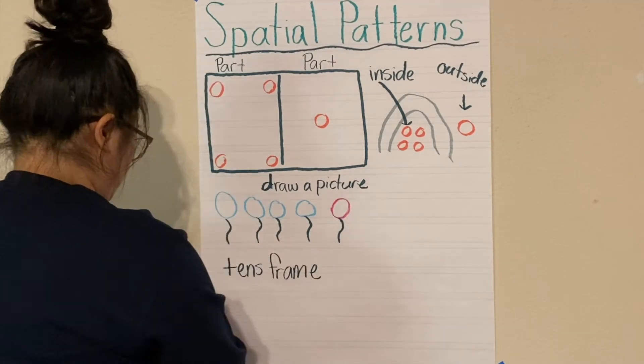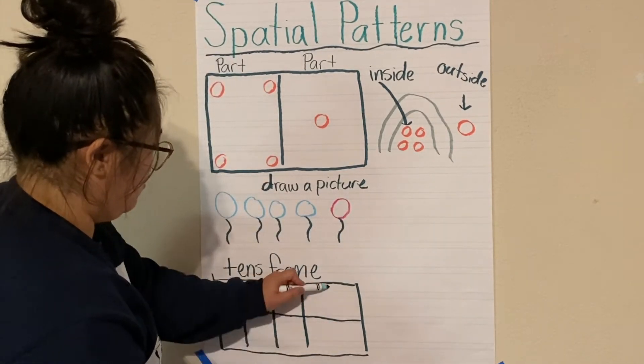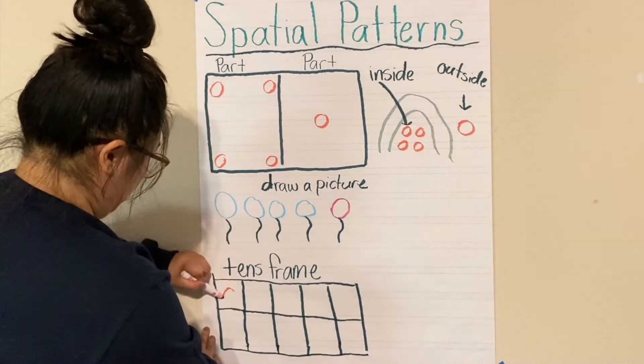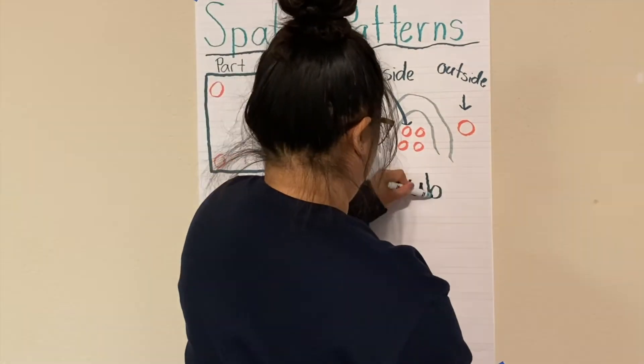After that I drew a ten frame and I was making sure that I made ten boxes. Sometimes I mess up on that but this time I made sure I didn't. And I put four red counters and one yellow counter.